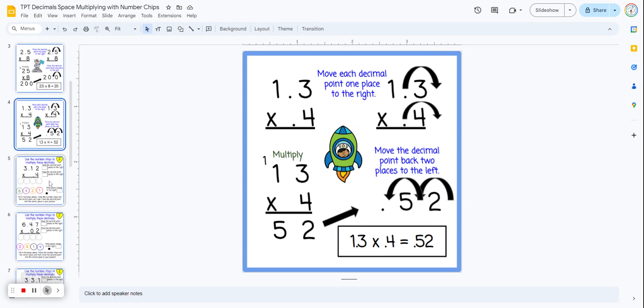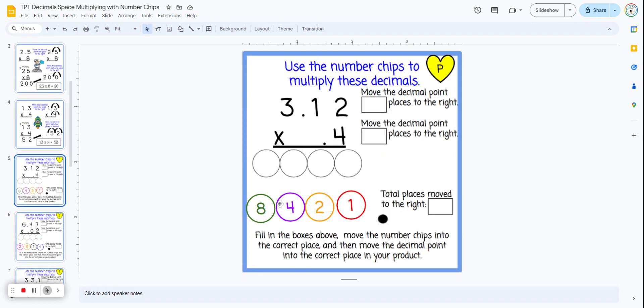Students are going to start on slide five, and they're going to be moving these number chips into the correct place for their multiplication. The first thing they want to do is look at each row of their multiplication and type here how many places they need to move that decimal point.